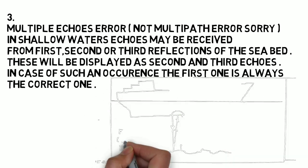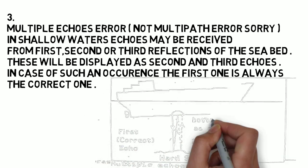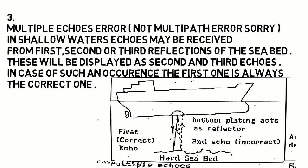The second and the third echo will always be weaker. The fourth one is the Pythagoras error.